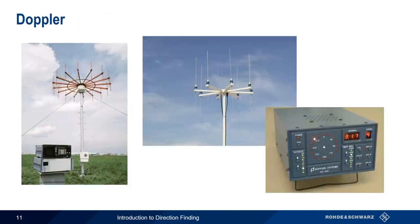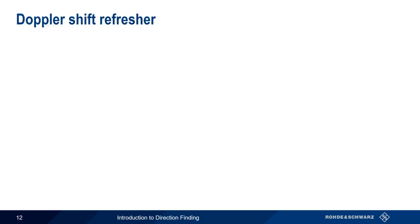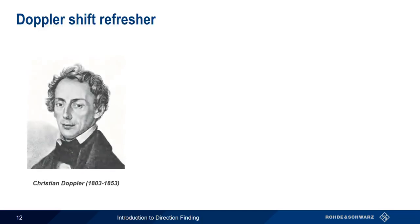Now that we've covered manual direction finding, let's move on to our first automatic direction finding methodology: Doppler. The Doppler effect, or Doppler shift, is named after Christian Doppler, who first described it in 1842. Doppler shift is a type of frequency modulation caused by relative motion.